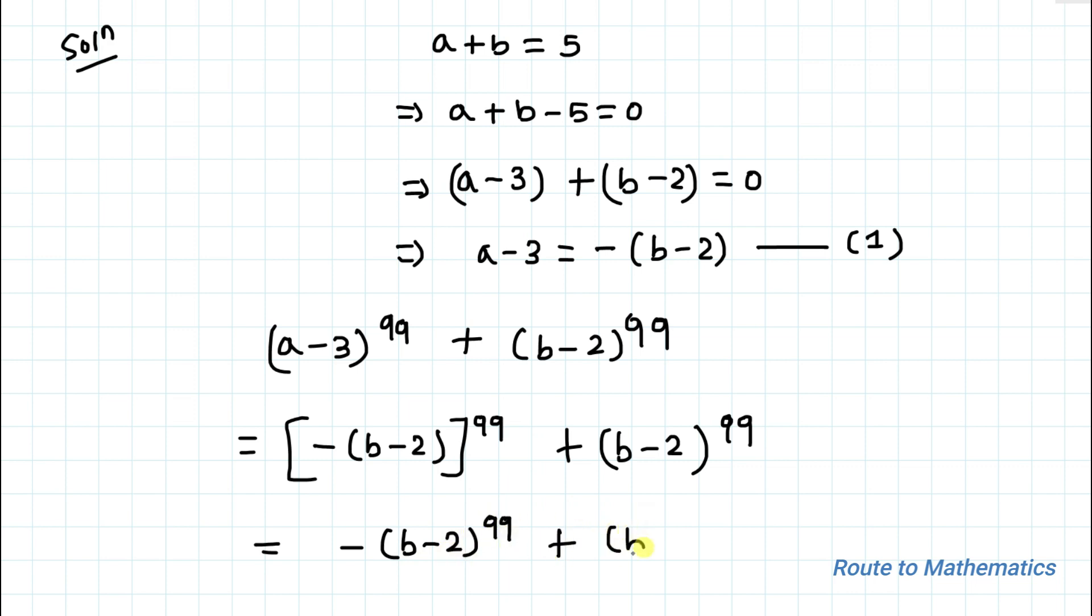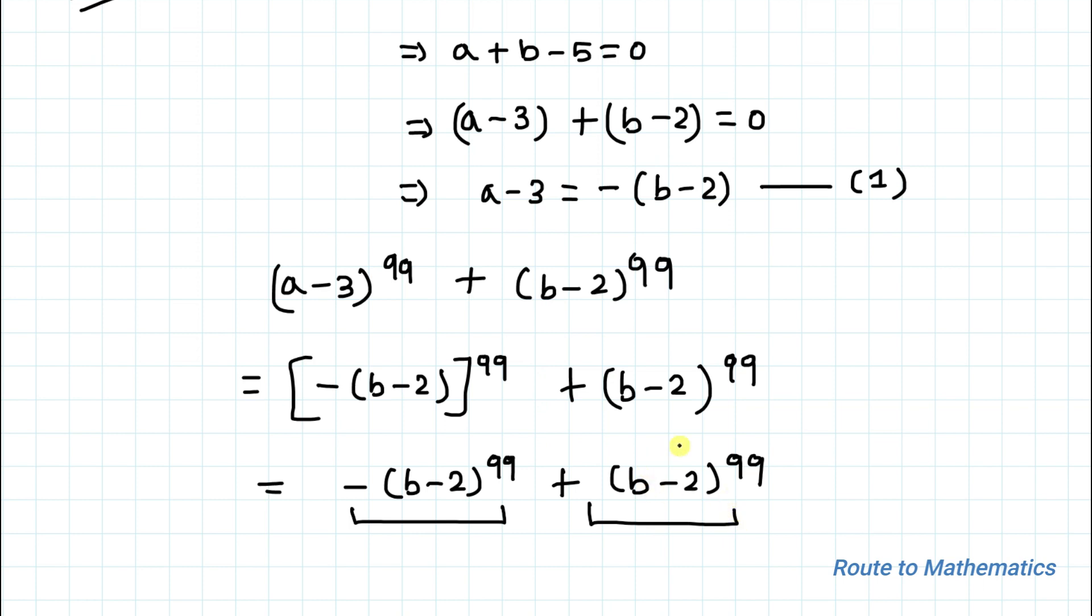Here we have negative b minus 2 and positive b minus 2. These two get cancelled out. So we have 0 as our answer.